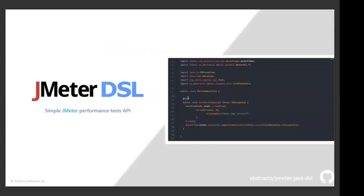Very briefly, JMeter DSL is a Java API. We also provide a .NET API, but in this webinar I will talk about the Java interface. It's a simple API that allows you to create JMeter performance tests and run them right in your IDE. Here's a simple example, but let's jump into the demo and I will show you everything — how easily you can use it and work with it.